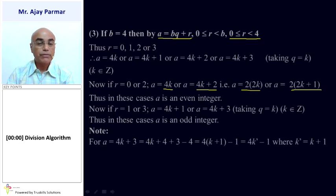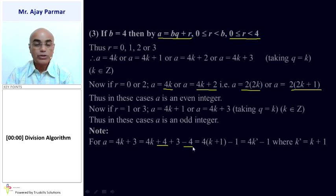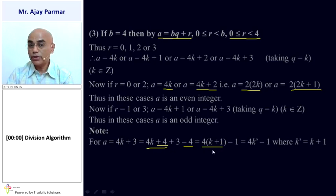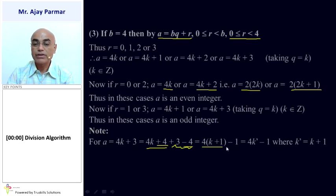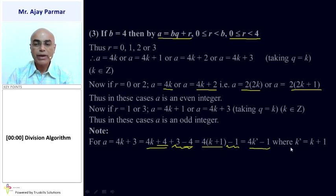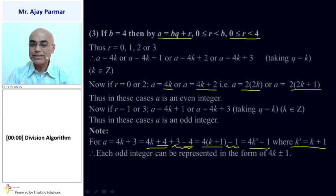For A equal to 4K plus 3, we can add and subtract 4, giving us 4 into K plus 1, minus 1. If we take K plus 1 as K-dash, we get 4K-dash minus 1, where K-dash is K plus 1. So each odd integer can be represented in the form of 4K plus or minus 1.